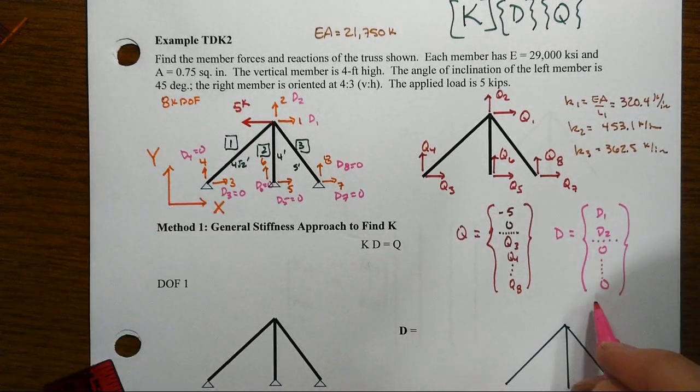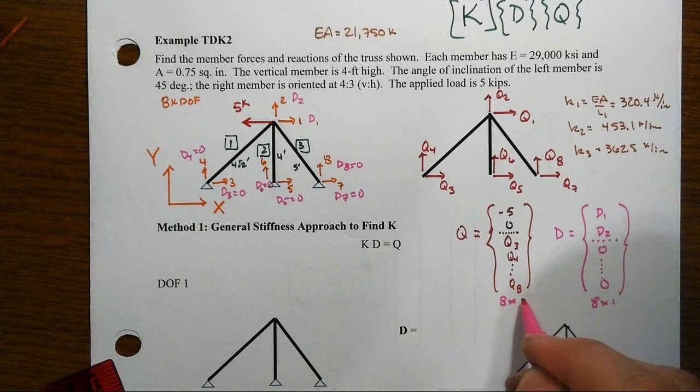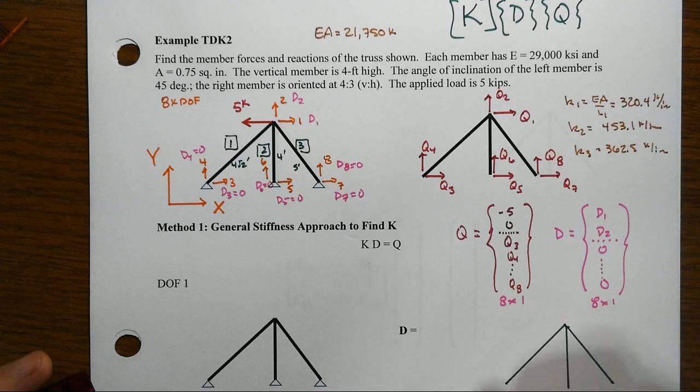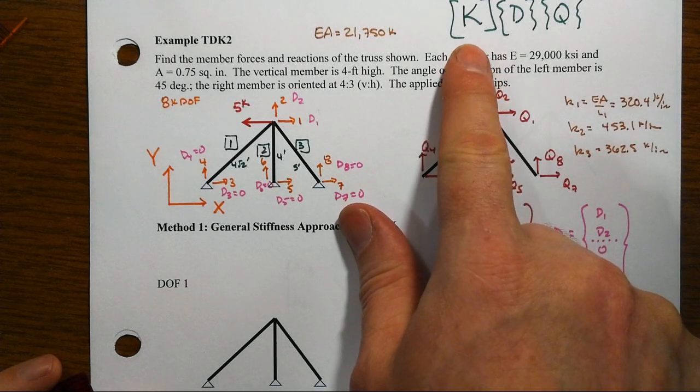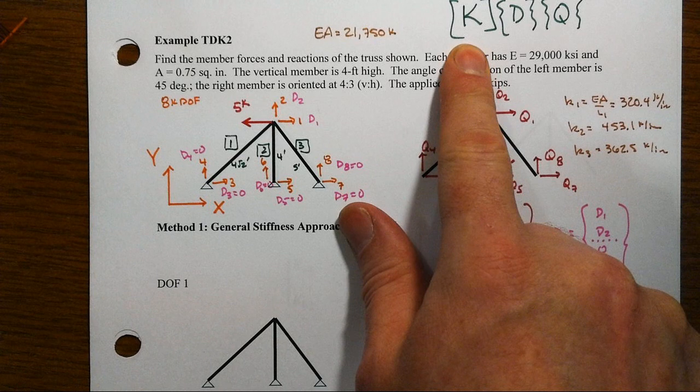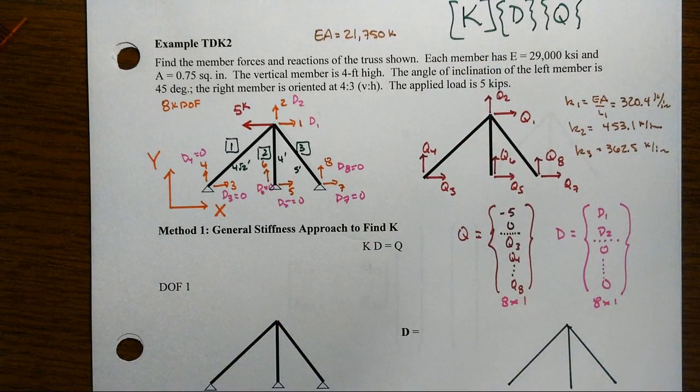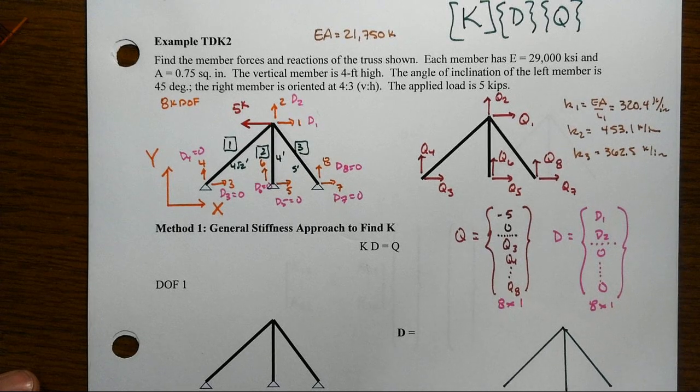And again, the size of that is 8 by 1, and that's also 8 by 1. All right, that's the general setup. Now next what we're going to do is we're going to go through the process of how we create that structural stiffness matrix, first using the generalized stiffness method, and then we'll do it again using the direct stiffness method.